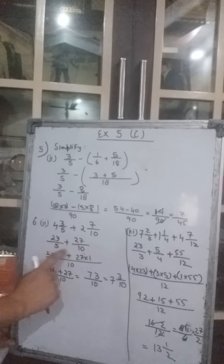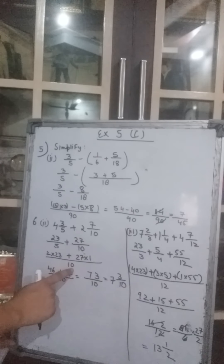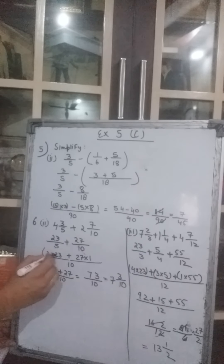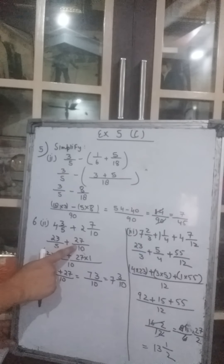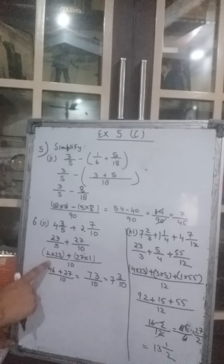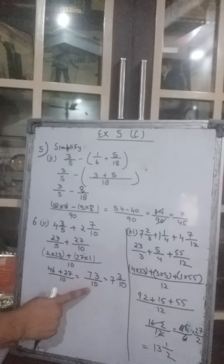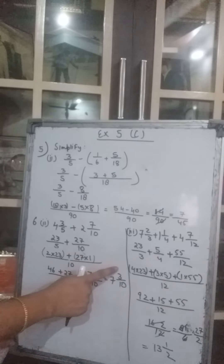The denominators are different so let's find out the LCM, which comes to 10. Now 10 divided by 5 gives you 2, and 2 into 23 — the numerator gets multiplied — plus, since the LCM is same as the denominator, 27 comes as it is. So 2 into 23 gives you 46 plus 27 upon 10, which gives you 73 upon 10. When the denominator is small you always convert it into a mixed fraction: dividing 73 by 10 gives you 7 whole 3 upon 10.